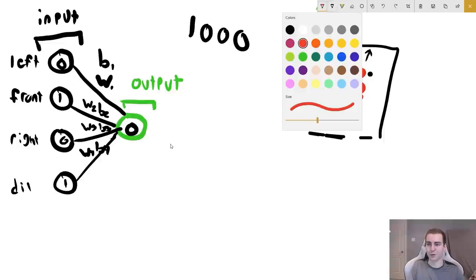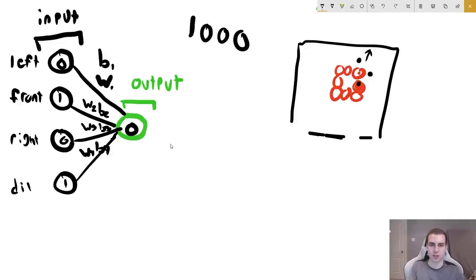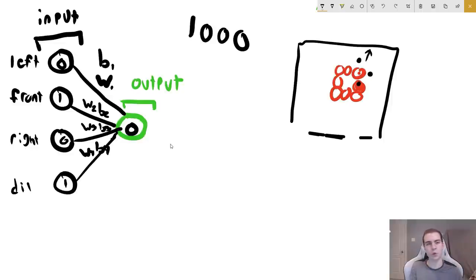The last concept for neural networks in this section is the loss function, which helps us understand how weights and biases are actually adjusted. We know we look at the output, compare it to what it should be from our test data, and then adjust the weights and biases accordingly. But how do we know how far off we are and how much to tune? That's where the loss function comes in — it is a way of calculating error.